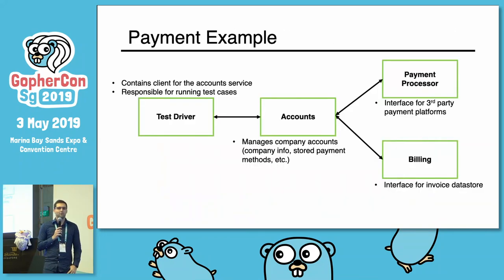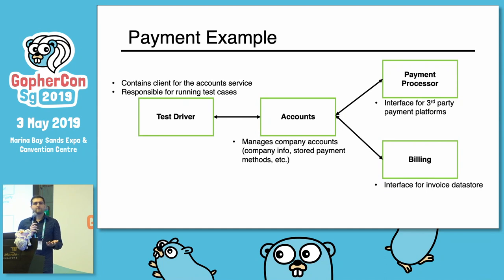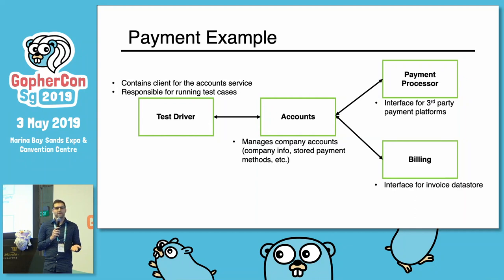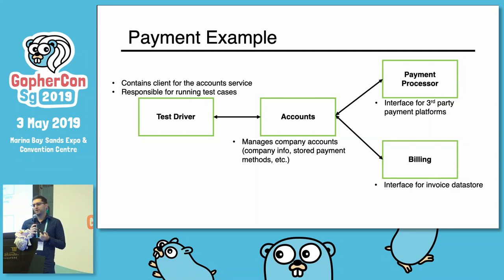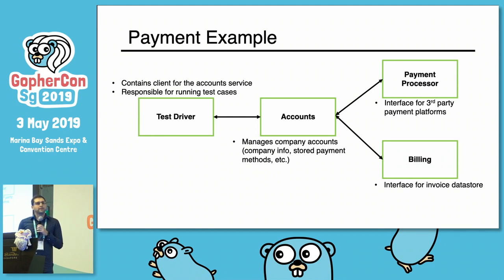To illustrate this point and what you should be doing, I came up with an example where I have three services and a test service. The test service is the test driver — it's the client for the account service and is responsible for running all of the tests. The account service manages accounts, like a profile service — it stores credit card information, contact info, addresses, etc., and makes calls to downstream services such as the payment processor, which could be a third-party interface over Stripe or PayPal. The billing service manages a data store for invoices. We'll use this in the end-to-end and integration examples.